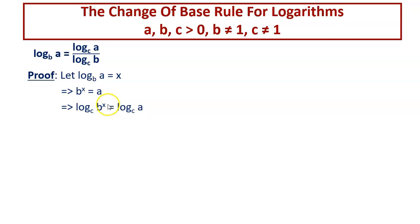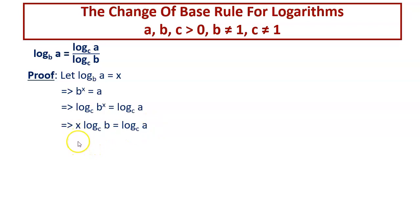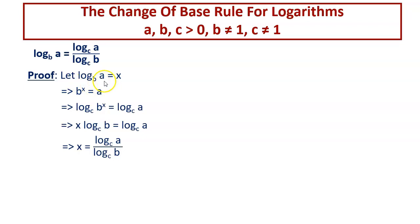We bring down X from the power position to the coefficient place, so it becomes X times log of B to the base C is equal to log of A to the base C. That gives us X equal to log of A to the base C over log of B to the base C. And what is X? X is log of A to the base B. Therefore, log of A to the base B equals log of A to the base C over log of B to the base C — which is the change of base rule.